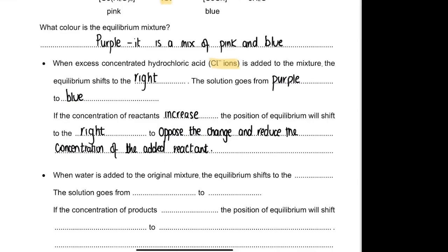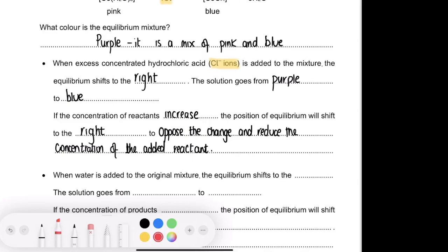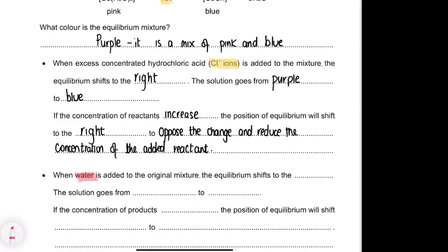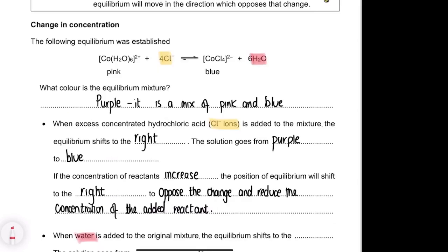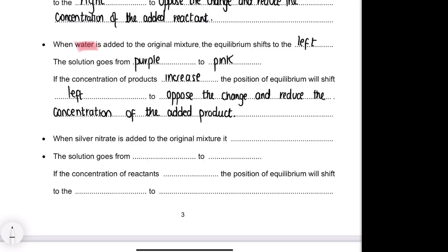What if we add water to this equilibrium? Water appears on the right-hand side of the equation. According to Le Chatelier's principle, the equilibrium will shift to remove that added water by converting it back into the compounds on the left. So the solution will go from a purpley color back towards pink — it becomes more pink. If you add a product, the equilibrium shifts to the left, to oppose the change and reduce the amount of added product.